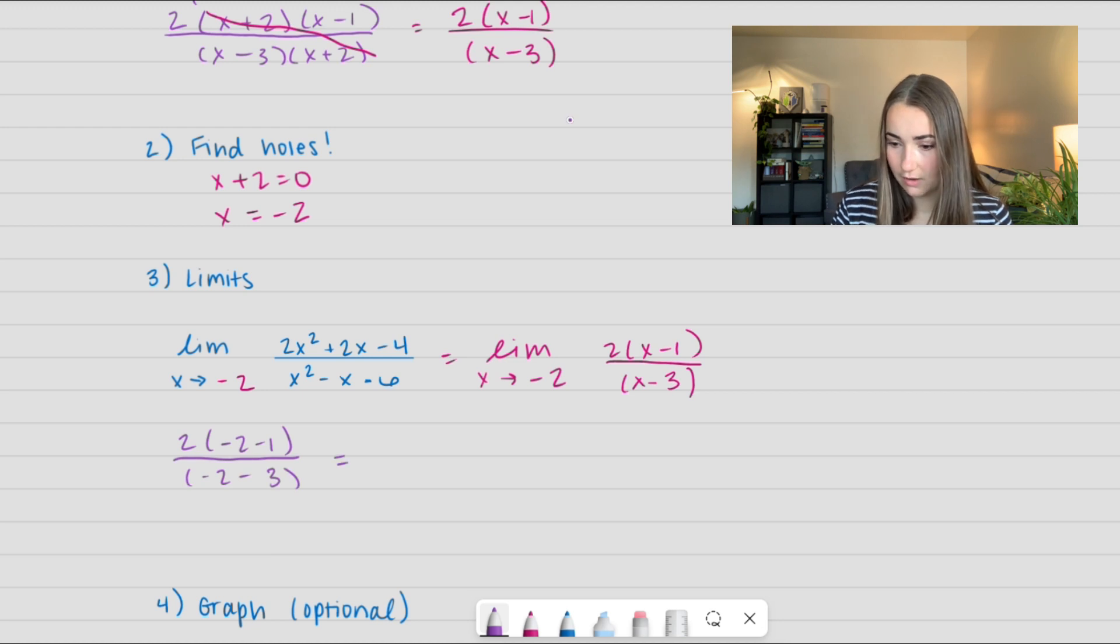If I simplify that out, I get 2(-3)/(-5), which gives me positive 6/5. And so now we have a hole at x = -2 and y = 6/5.